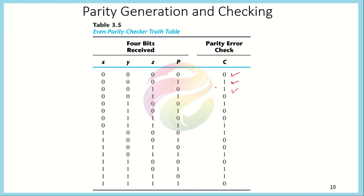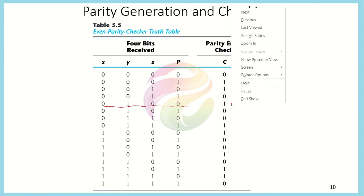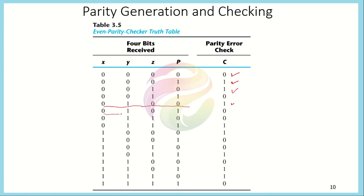Whenever there is a one at the output c, it indicates an error in transmission; a zero at c means the parity check passed and data was received correctly. For example, if x, y, z have an odd number of ones, the parity should be one, but if it was received as zero, there has been a transmission error and c will produce a one. If transmitted correctly — say zero, one, zero — parity would equal one and c would equal zero, indicating a correct result. This is how exclusive OR gates are used for parity generation.